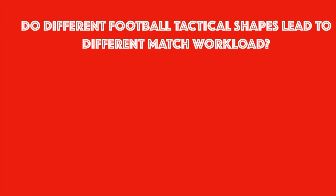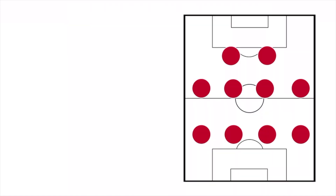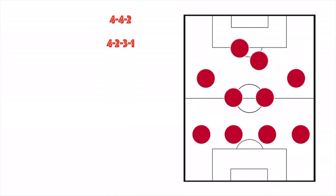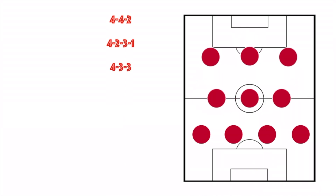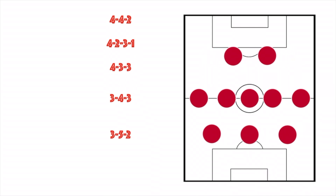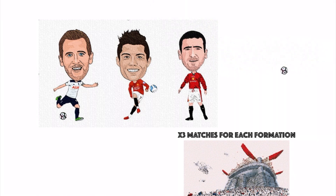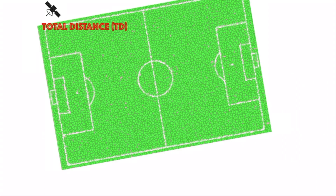The authors of this paper provide an answer. The most common five tactical shapes were studied: the 4-4-2, the 4-2-3-1, the 4-3-3, the 3-4-3, and the 3-5-2. Among 46 players in the English Professional League, three matches for each formation were studied, and four elements were considered.